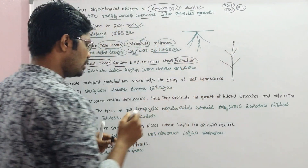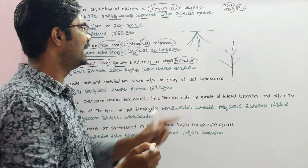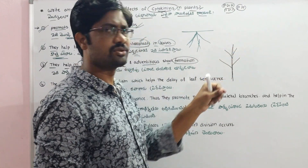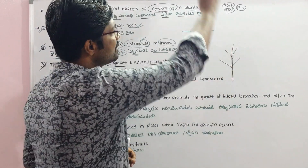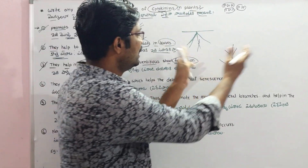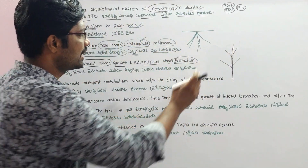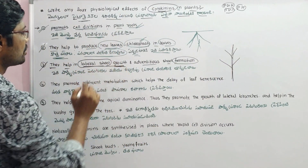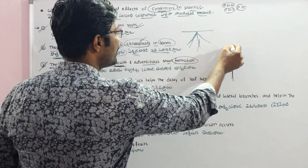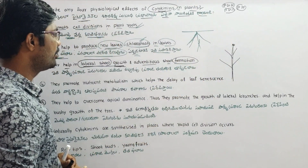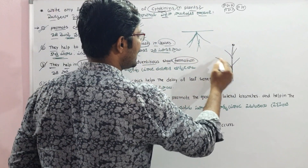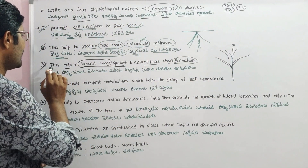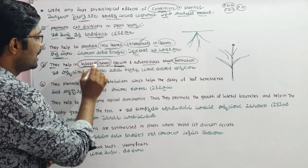Cytokinins can promote the growth of lateral branches. When a branch is growing, the lateral branches also develop. Cytokinins help lateral root and shoot growth — they stimulate the development of lateral shoots from the existing branch structure of the plant.